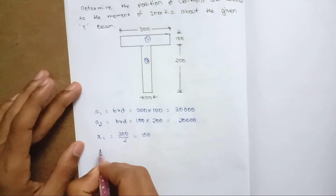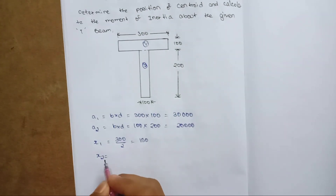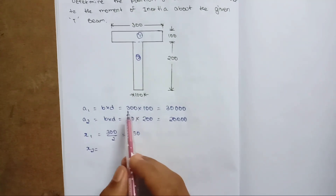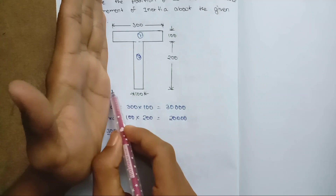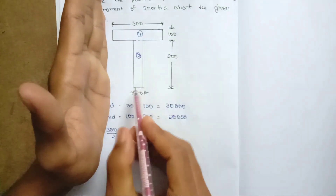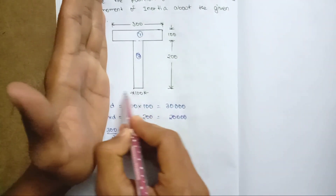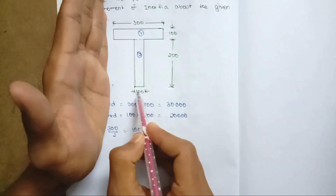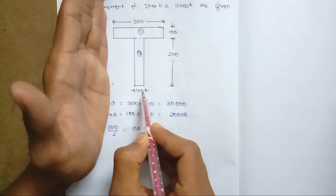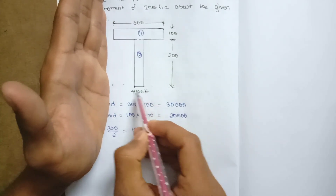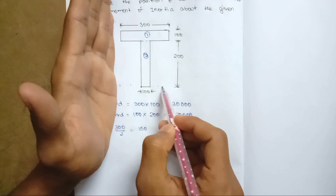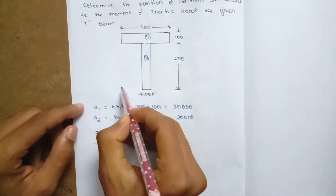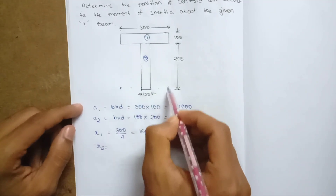Next, x2 calculate. With reference to the y-axis, x1 is the same. We should calculate the first rectangle's dimensions here. We have 300 at the first rectangle and 100 at the second. In this example, 300 and 100 gives 200. So 200 divided by 2 is 100, just 200.